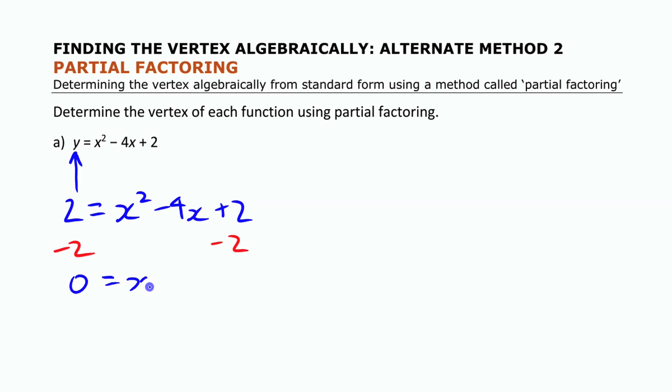...I get 0 is x squared minus 4x. So basically what I'm doing is I'm just factoring this part of it. It's called partial factoring because you're only factoring that part. Essentially, you're eliminating the other part.